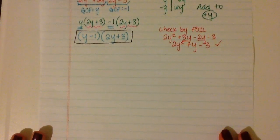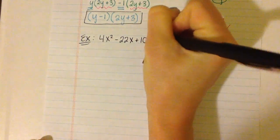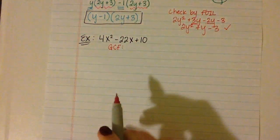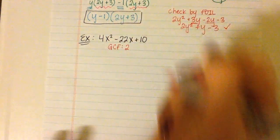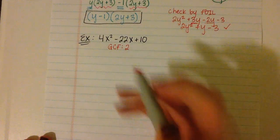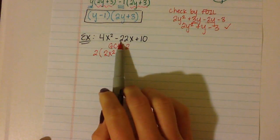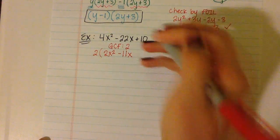Next example: we have 4x squared minus 22x plus 10. The first thing we're going to check for is our GCF. They're all even, so we can take a 2 out — our GCF is 2. If we take a 2 out of 4x squared we're left with 2x squared; out of negative 22x we're left with negative 11x; and out of 10 we're left with 5.